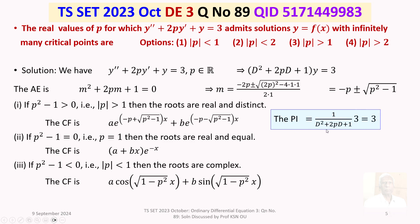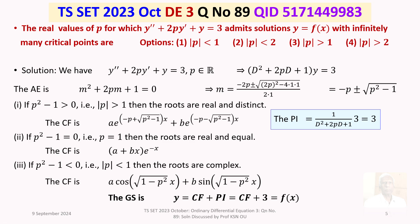The particular integral is given by 1/(D² + 2pD + 1) operating on 3. Treating 3 as 3e^(0·x) and substituting D = 0 gives particular integral = 3. So the general solution is y = f(x) = complementary function + 3. The question now is: for what values of p does f(x) have infinitely many critical points?